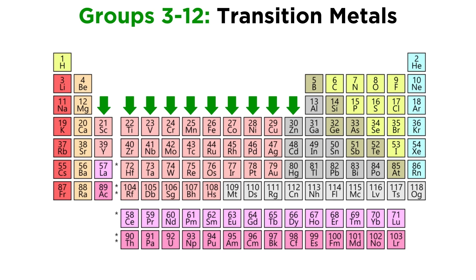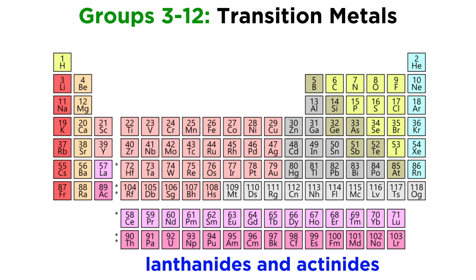This section of the table is called the transition metals, many of which have similar chemical properties, such as the ease with which they are oxidized. And the groups below the table, which are meant to fit in between group two and the transition metals, are called the lanthanides and actinides. Many of these are quite rare, and some do not even occur naturally, so we do not discuss them frequently, except maybe uranium from time to time.